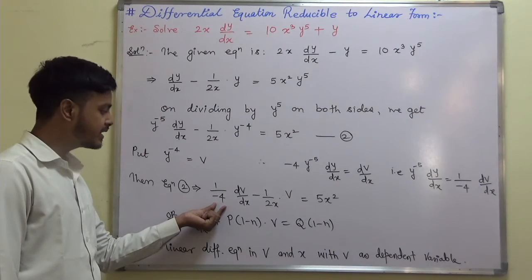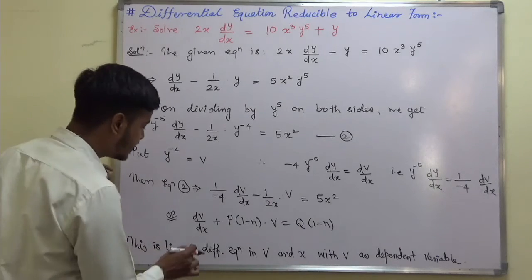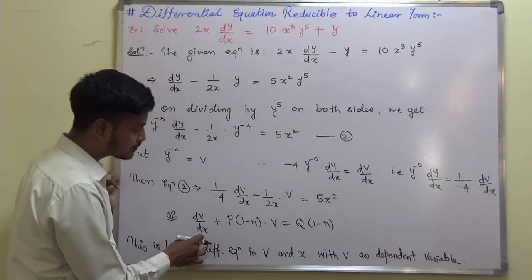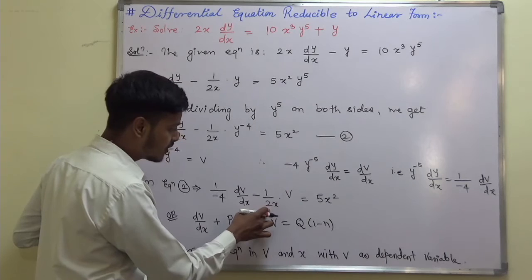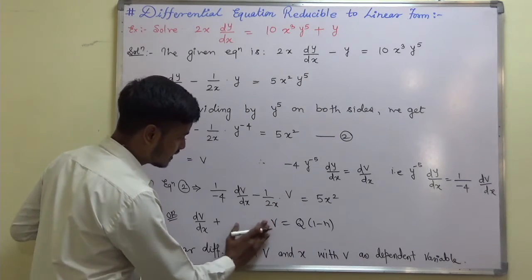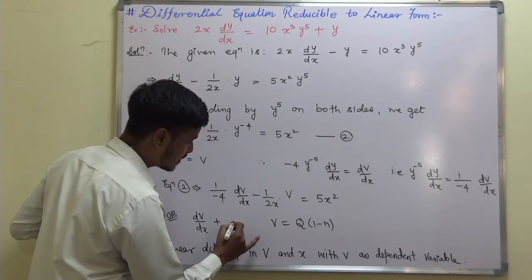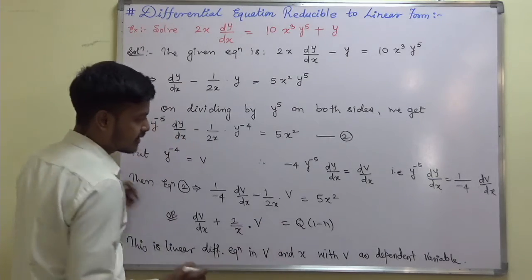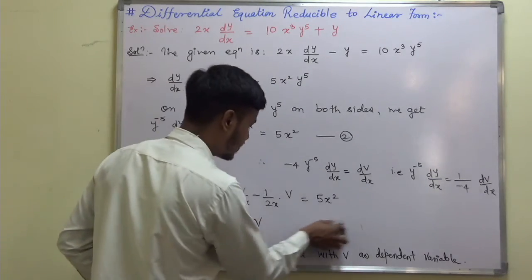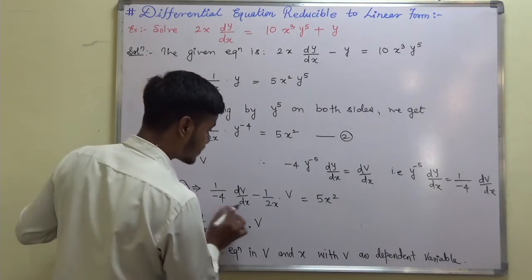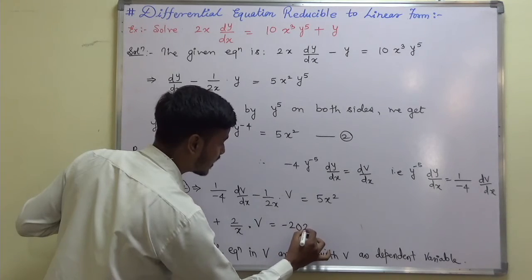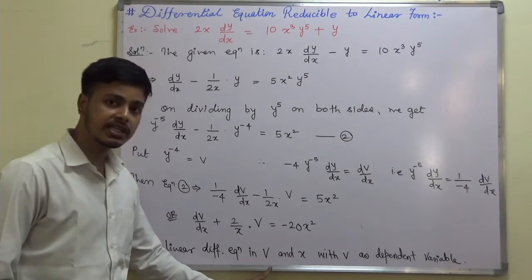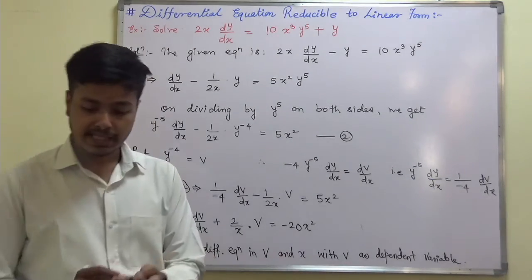Multiplying throughout by −4: dv/dx + (2/x)·v = −20x². This is a linear differential equation in v and x with v as the dependent variable.